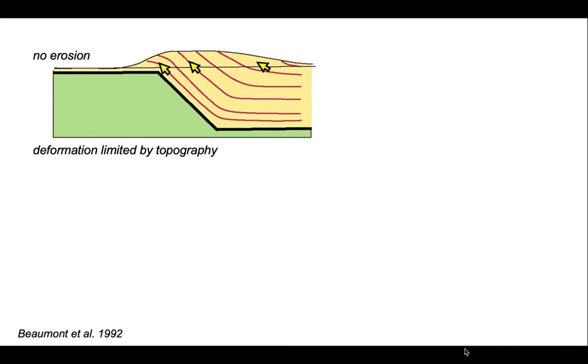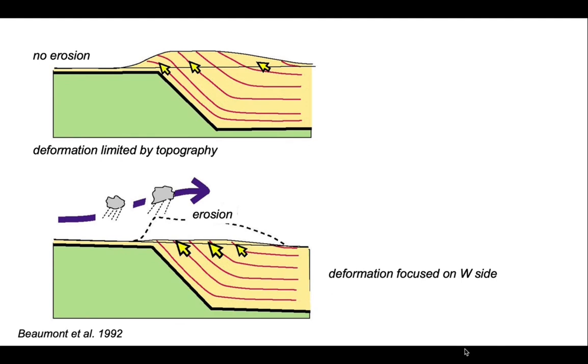This effect was explored further by Chris Beaumont's group in the early 1990s. This shows the results of numerical models showing deformation of some yellow rocks driving up a thrust ramp. The trajectories taken by material are shown by the red lines and yellow arrows. This shows the deformation when there's no erosion — it is limited by topography. But if we build differential erosion on the left hand side, the deformation also focuses on this left or western side. Where you have erosion in this system changes where the deformation localizes.